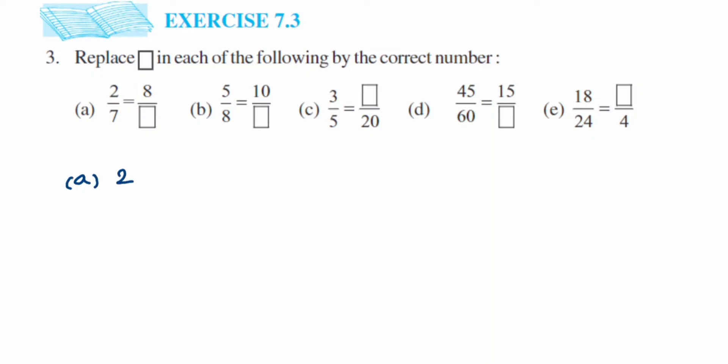The first question is 2 by 7 is equal to 8 by dash, so we have to find out the missing number. They have given the equivalent fraction here. We have to figure out how we got 8 from 2. This is by multiplying with 4. So the 4 you have to multiply with 7 also, so when you multiply with 7 you get the answer 28.